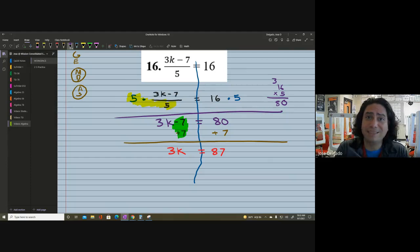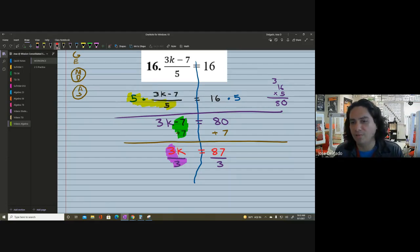So the opposite of negative 7 or minus 7 is plus 7. And you could already see that we're adding 7 to both sides. Whatever you do to one side, we surely do on the other side. We got ourselves 3K on the left. 80 plus 7 is 87. We're almost done here. We got one last step. It says 3 times K equals to 87. So our last step, our inverse operation would be to divide both sides by 3.